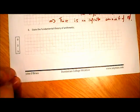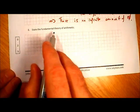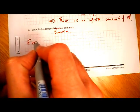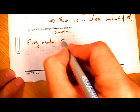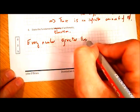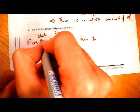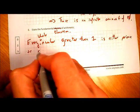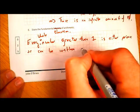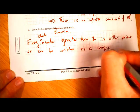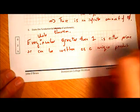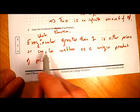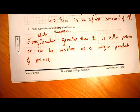Question 6: state the fundamental theorem of arithmetic. Every whole number greater than one is either prime, or can be written as a unique product of primes.